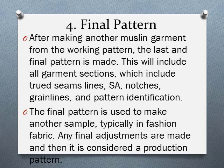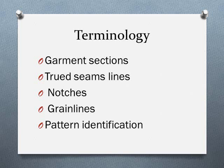From your working pattern, you make another muslin garment, and your final pattern is made after that. The final pattern must include garment sections, trued seam lines, seam allowances, notches, grain lines, and pattern identification. This final pattern is used to make another sample in your fashion fabric, final adjustments are made, and that is when your pattern is considered a production pattern — but only in one size. We'll get into grading in just a bit.